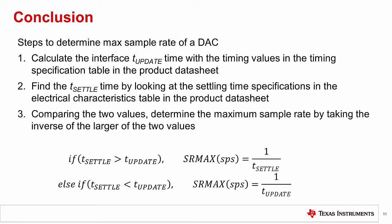Okay, those are the basics of update time and settling time. In conclusion, the maximum sample rate at which a DAC can be updated could be limited by either the interface update time or the analog settling time. To determine the max sample rate, we must first calculate the digital interface update time by summing the various timing limits in the product's timing specification table.